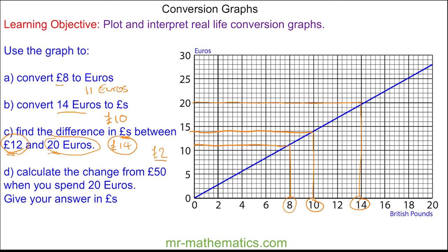And finally for question D, calculate the change from £50 when you spend 20 Euros and give your answer in Pounds. So we're going to convert 20 Euros into Pounds, which you can see we've already done in the previous question. So this is 14 pounds, so the difference between 50 and 14 pounds is 36 pounds.